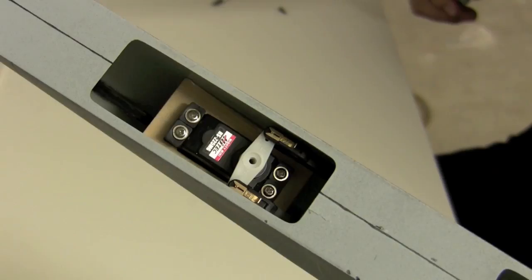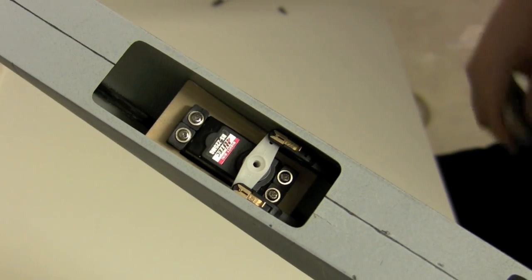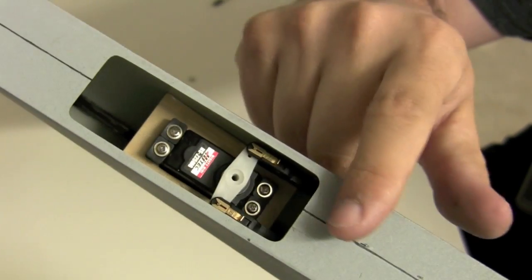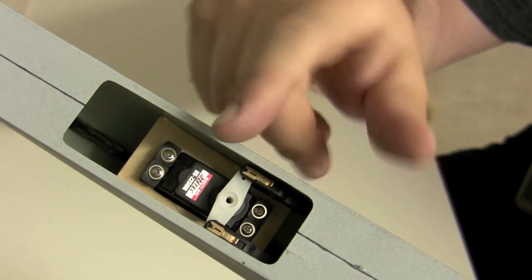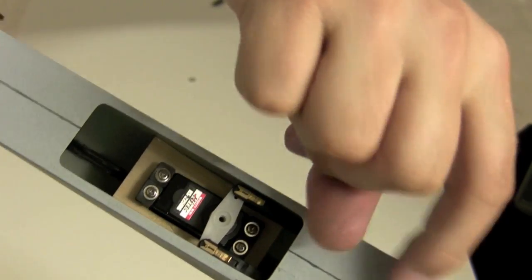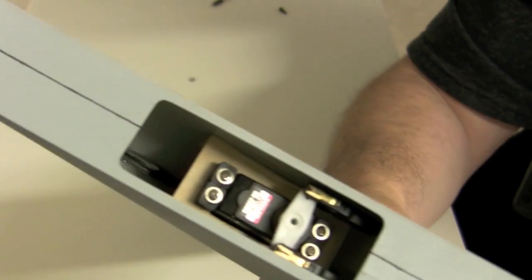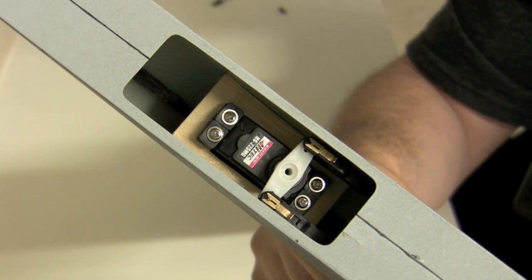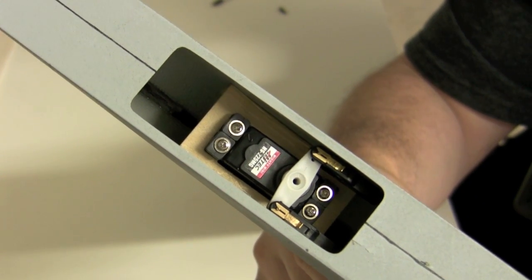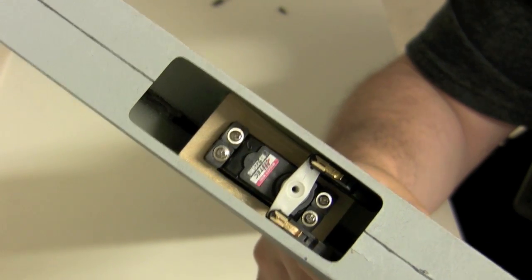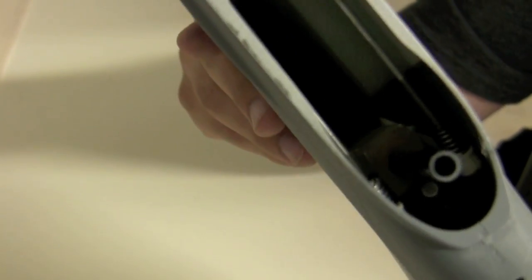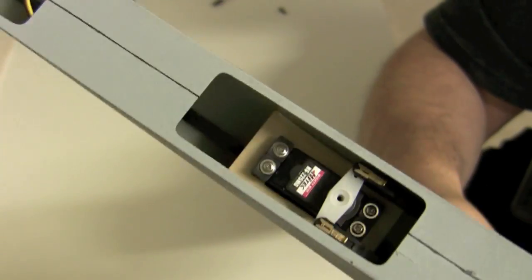Okay, check it out. I switched the servo direction around so that we've got the servo arm on this side rather than the servo flipped around backwards. This way, if I ever need to get that servo out, it's gonna be a heck of a lot easier and I've got better access to the screws and everything.